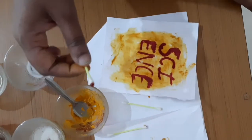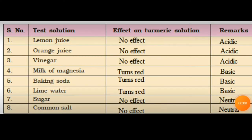Now we will discuss table 5.3, which is on page number 52. You can see that a total of eight samples are given; you observed four of them in this video. With the help of those observations, fill in the table. If you are interested, you can do the same activity at home with available samples — turmeric powder, soap solution, lemon juice, and vinegar are available in most houses. Try this activity at home in the presence of your parents, and also try preparing the greeting card with soap solution and turmeric powder.